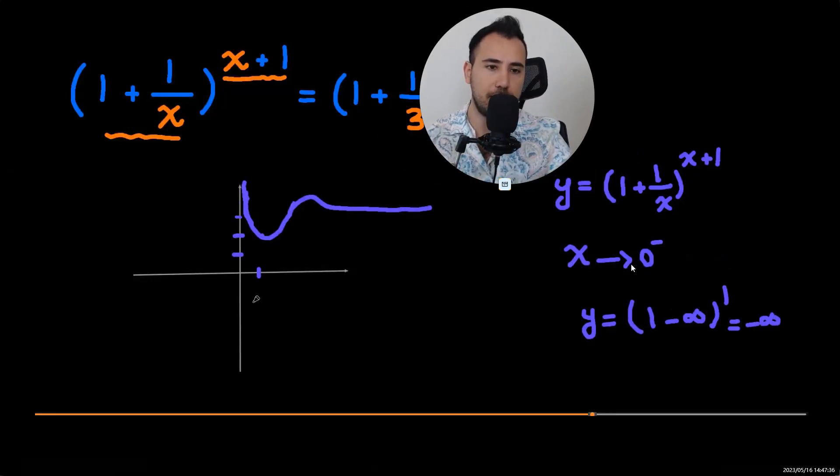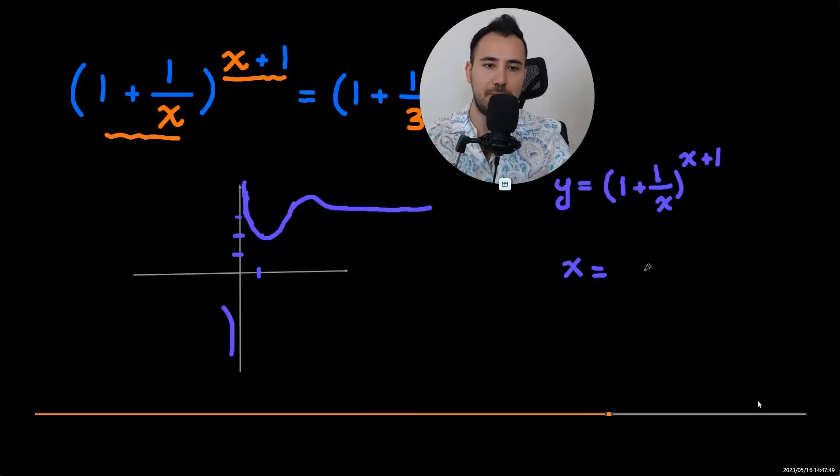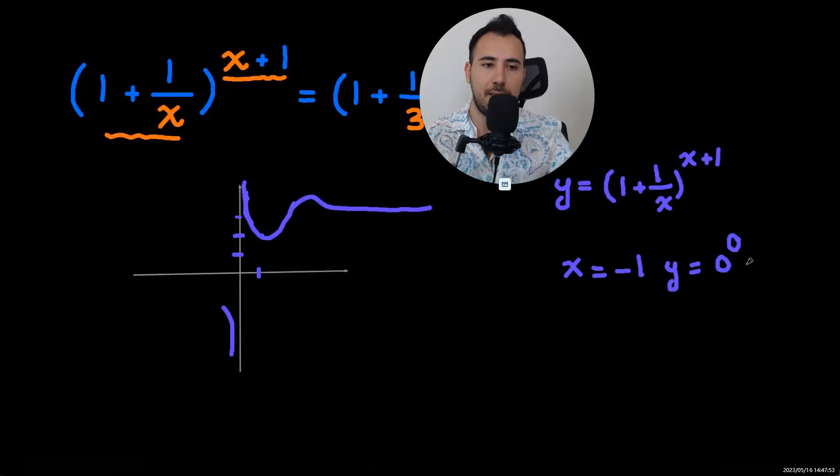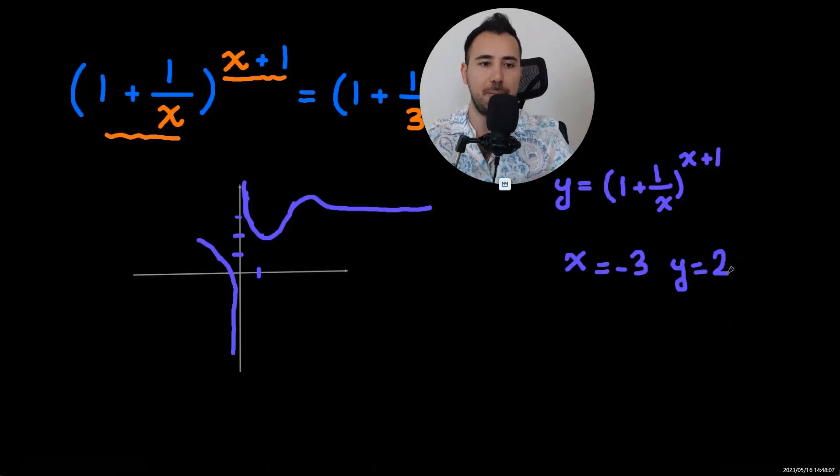When x approaches zero from left, one over x would be negative infinity, so the whole thing will be looking like this. So we need just some additional points. We know that the value of zero to the power of zero is one.